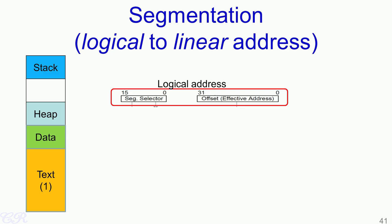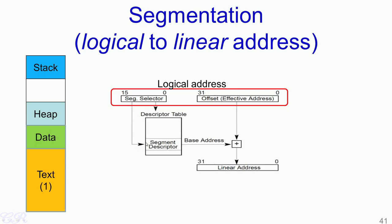Let us look at another view of this mapping scheme. The logical address comprises of two parts: a segment selector as well as an offset address, also known as the effective address. The segment selector in an Intel 32-bit processor is 16 bits, while the effective address or offset register is 32 bits. The contents of the segment selector are used as an offset into the descriptor table. The memory management unit then picks up the base address from this offset and adds it to the effective address to produce what is known as the linear address.